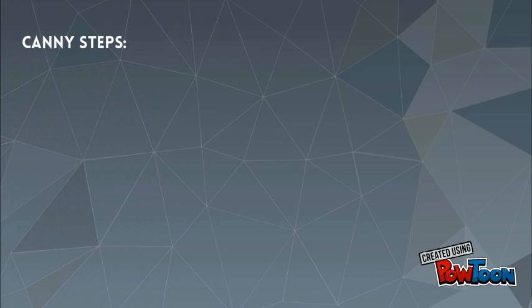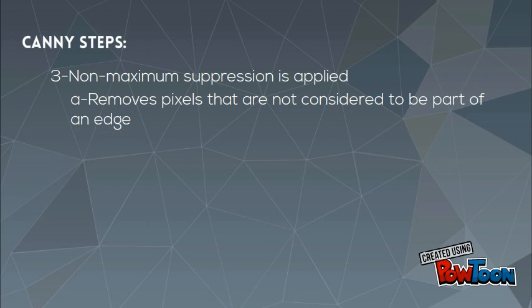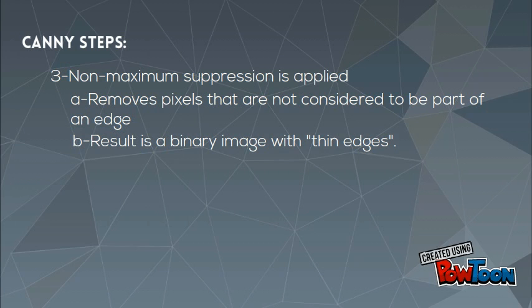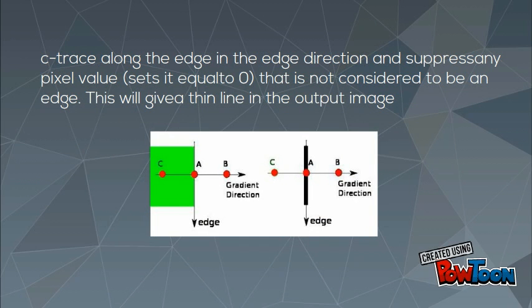The third step is non-maximum suppression, which is applied as follows. A: it removes pixels that are not considered to be part of an edge. B: the result is a binary image with thin edges. C: trace along the edge in the edge direction and suppress any pixel value, setting it equal to 0, that is not considered to be an edge.